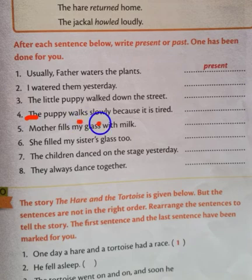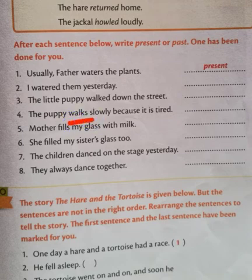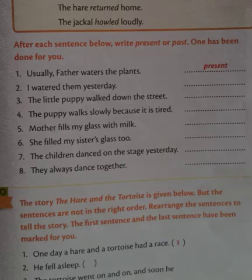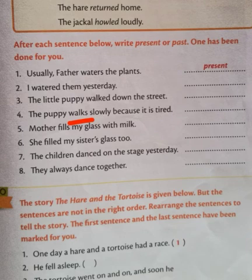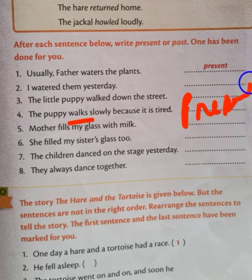Number four: 'The puppy walks slowly because she is tired.' The verb is 'walks,' and this is the present form of the verb. So present tense is used here — it is telling us the activity is happening right now. We write 'present' — P-R-E-S-E-N-T.